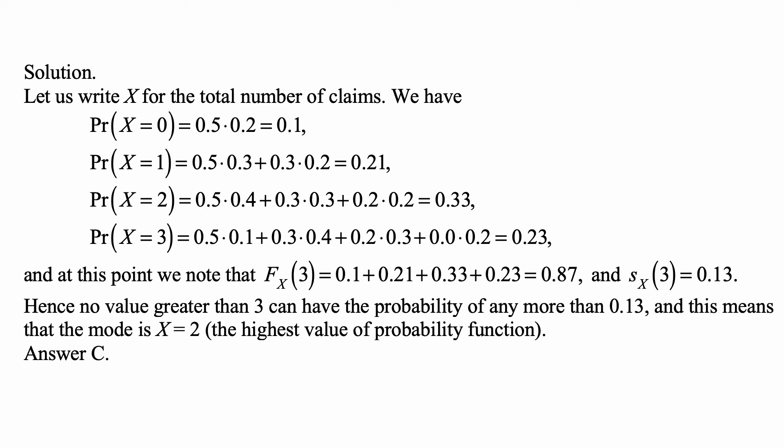And the crucial observation is this: if you go through these values that you see here, we're looking for the mode, so we're looking for the largest probability of these probabilities. Well, the largest one right now is 0.33, so it's possibly the mode, X equal to 2. Can there be a larger probability down the road, because we know that values of X can go from 0 to 6?